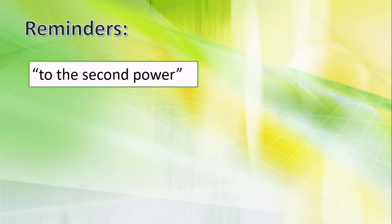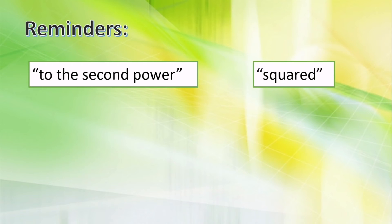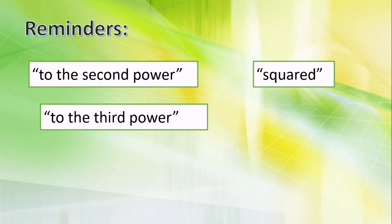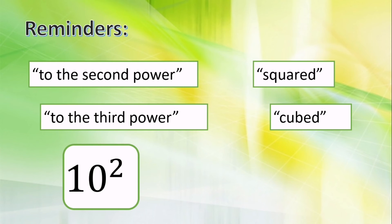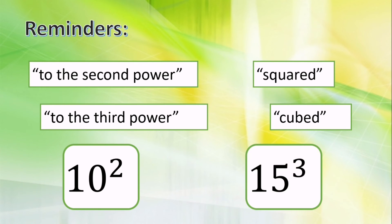Pay attention to these reminders. If the exponent is to the second power, you can also read it as 'squared.' If the exponent is to the third power, you can also read it as 'cubed.' For example, this is 10 to the second power or 10 squared. And this is 15 to the third power or 15 cubed.